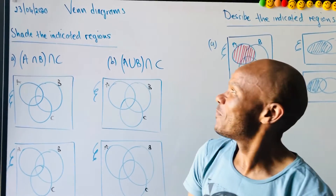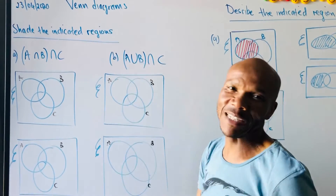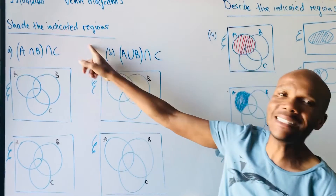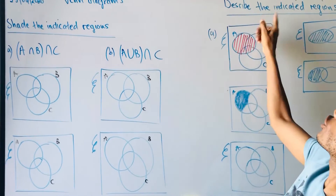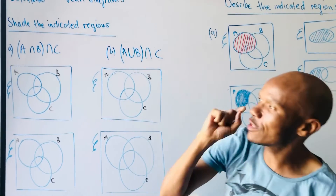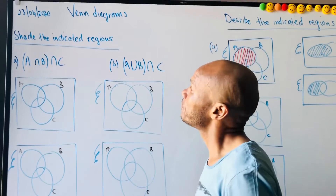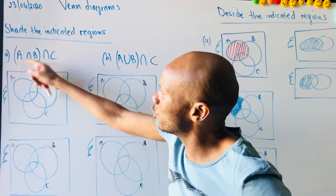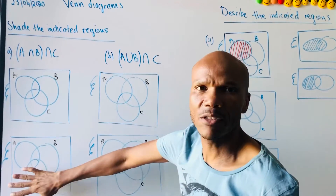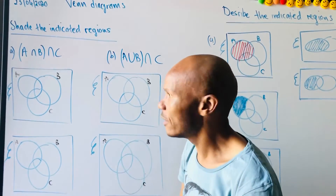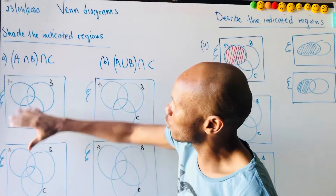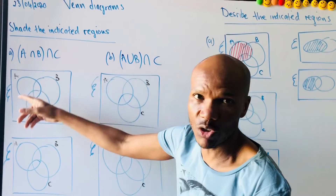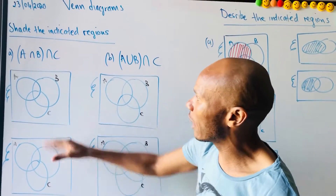Hi guys, I want us to continue with Venn diagrams. Today we are going to be looking at shading the indicated region and describing the indicated region. You won't be given these drawn — I just drew these so it'll take shorter time in recording. You've got A, B, and C, so you're going to have the three sets, and that's how you write it.